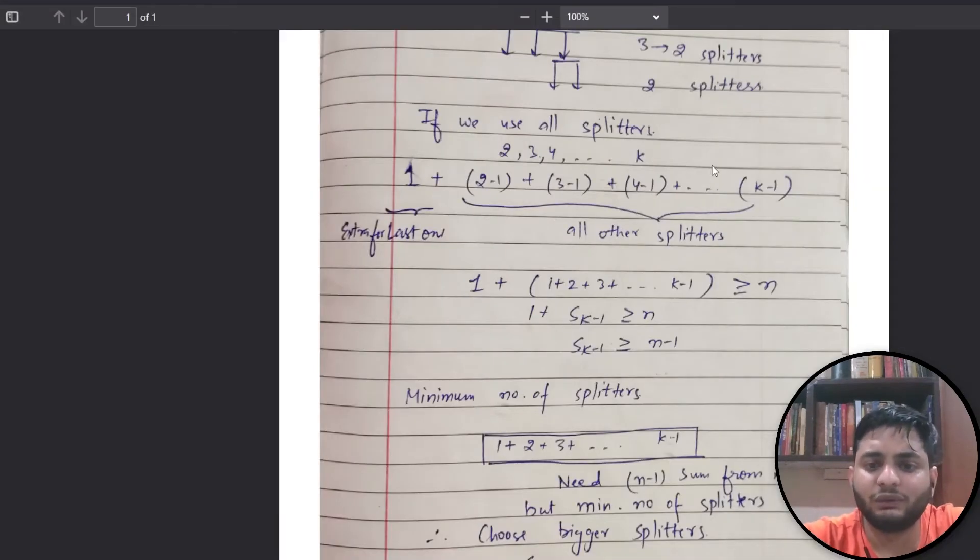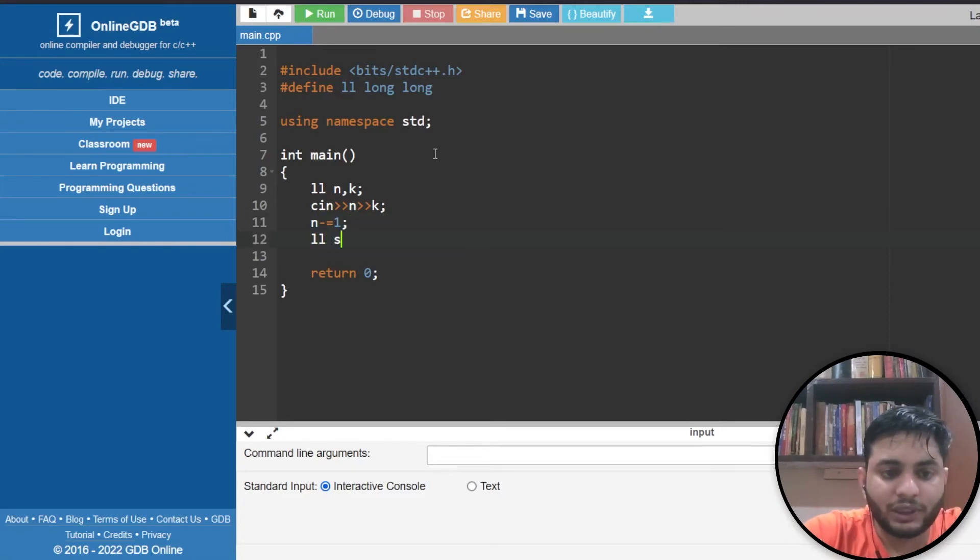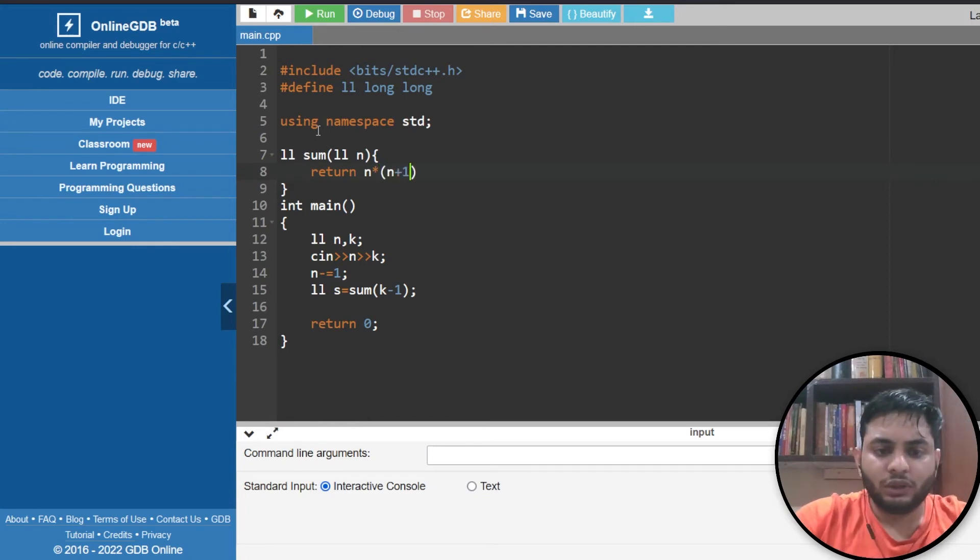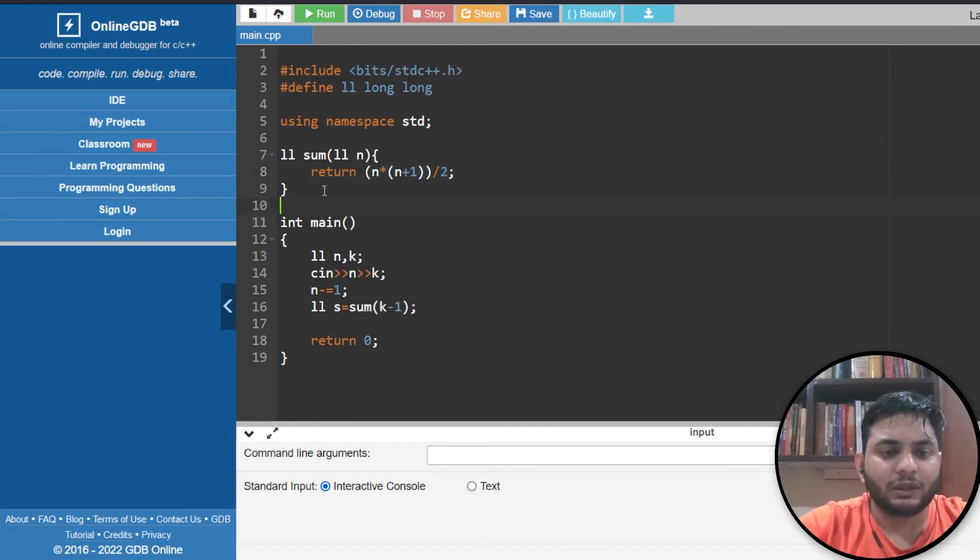Now for the code. First, the sum should be greater than equal to n minus 1. Let me subtract 1 from n, call it x. I'll create a sum function that returns the sum of n numbers, which is n times n plus 1 divided by 2. That handles the sum calculation.